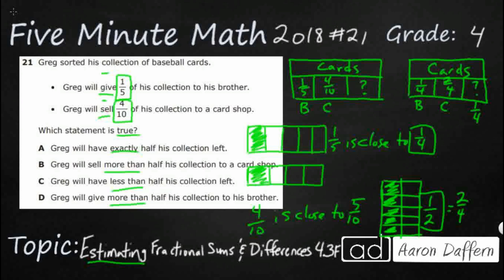So Greg will have exactly half of his collection left? Nope, he is going to have about a fourth. He will sell more than half his collection to a card shop? He sold a little bit less, four-tenths, a little bit less than five-tenths. He will have less than half his collection left? Yes, he is going to have about a fourth of his collection left. He will give more than half to his brother? No, one-fourth is definitely less than a half, so our answer here is C.